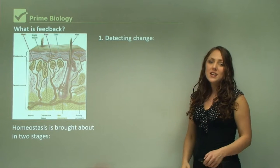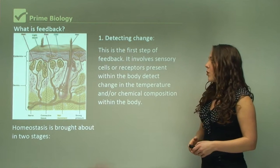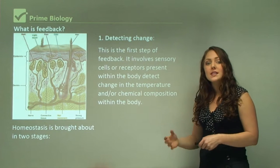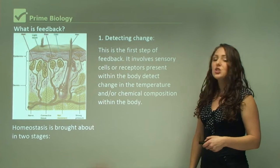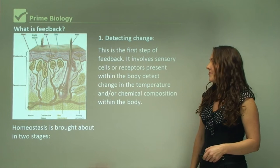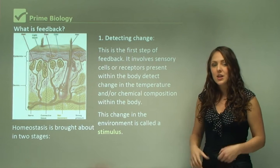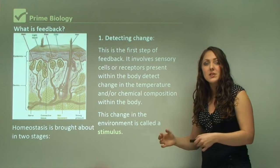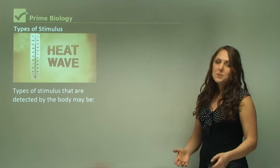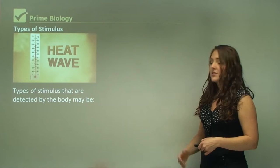Homeostasis is brought about by two stages. The first is detecting a change in the environment or within your body. This involves sensory cells, also called receptors, which are present within the body to detect changes in temperature or chemical composition. This change in the environment is called a stimulus. There are multiple types of stimulus and they are detected by different receptors in the body.